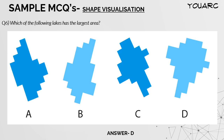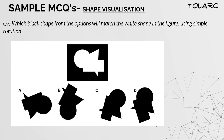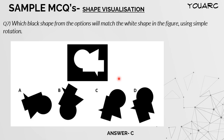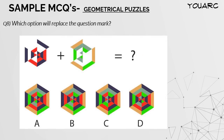The seventh question is another shape visualization question. They give a cutout shape and ask which option will fit into or coincide with it. It is simple and straightforward — twist the options and try inserting them. Pause and answer the question. The correct answer is C; you just have to twist it and it matches very simply.